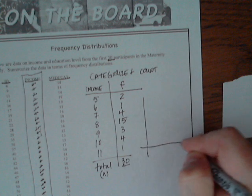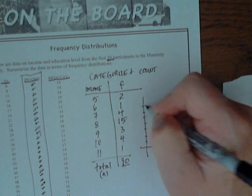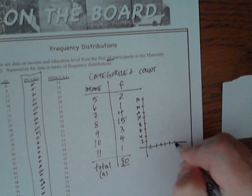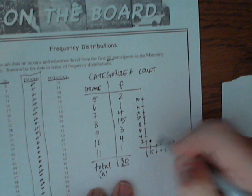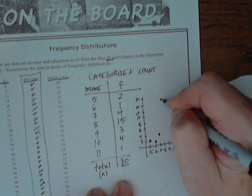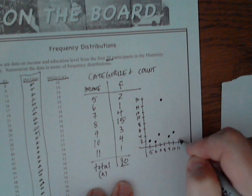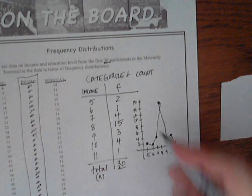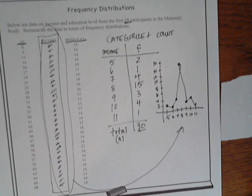From here, we might want to construct a little graph of the frequencies. Setting up our axes — frequency going up to 16, and income values 5 through 11 along the bottom. Then we can plot the frequencies: two 5s, one 6, four 7s, fifteen 8s, three 9s, four 10s, and one 11. If we connect these points, what we have is something that approximates a frequency distribution — a summary of these data. We've taken this raw data and turned it into that. Beautiful. Just perfect.